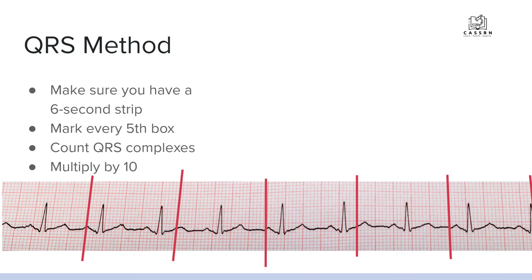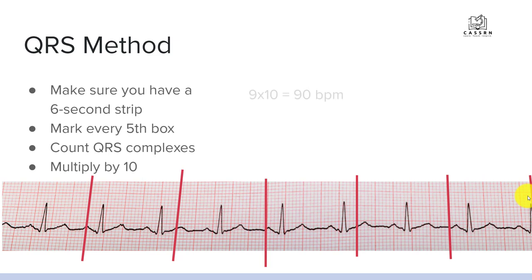Then we count our QRS complexes: one, two, three, four, five, six, seven, eight, and nine. We take that number — nine — and multiply it by 10. That tells us we have 90 beats per minute.